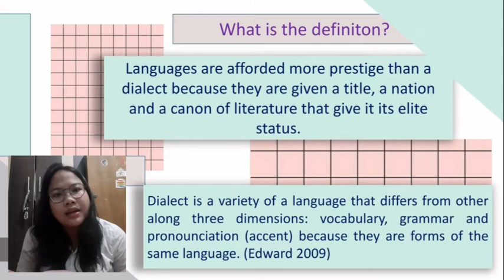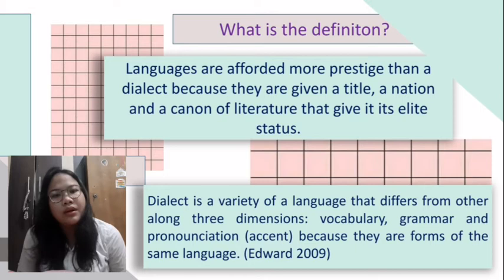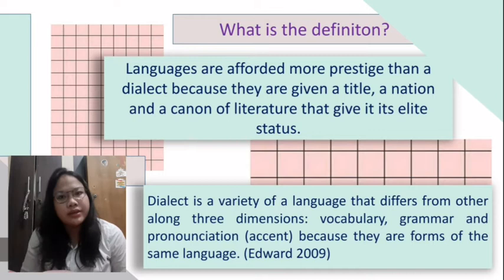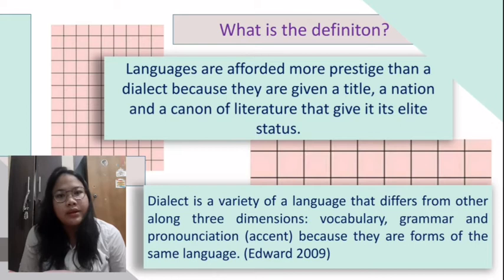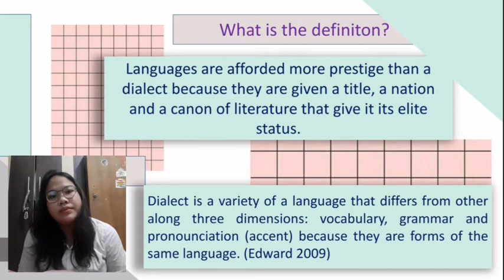One expert, Hogan, said that language and dialect is an ambiguous term. Why is that? Another expert, Gumpers, said one of the reasons is because of the historical factor. For example, Hindi and Urdu are both considered as separate languages because they are the languages of two different nations — India and Pakistan — even though they are linguistically very similar.